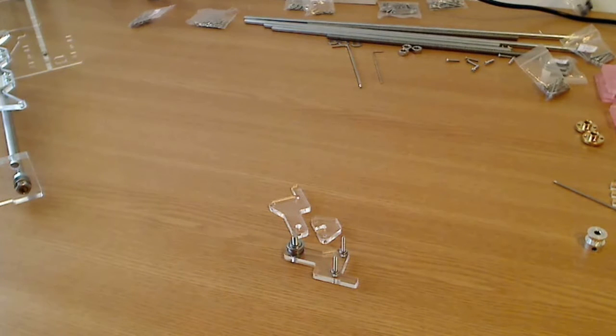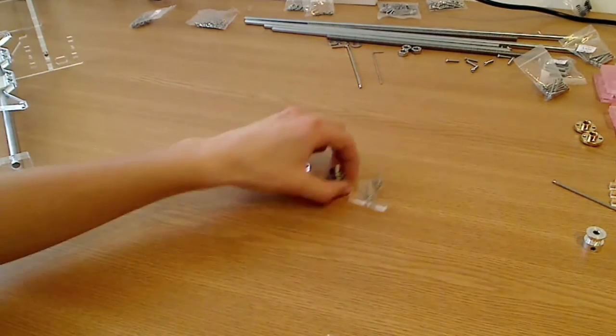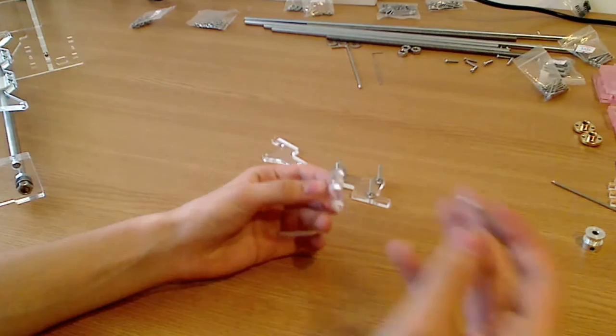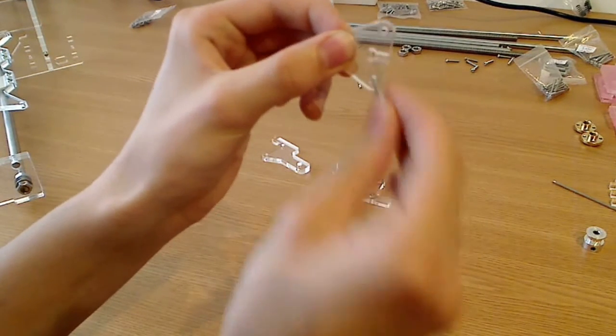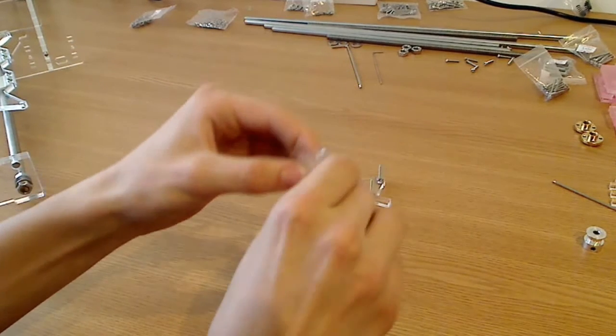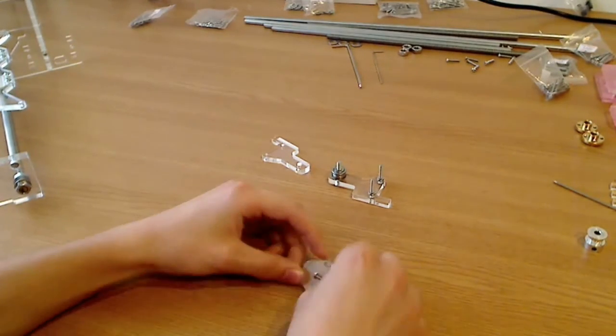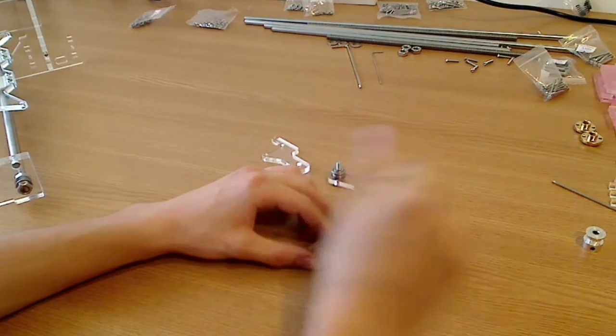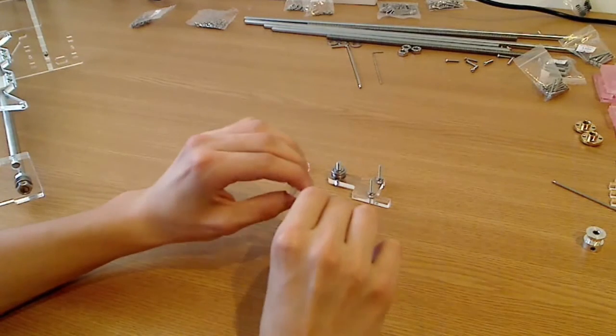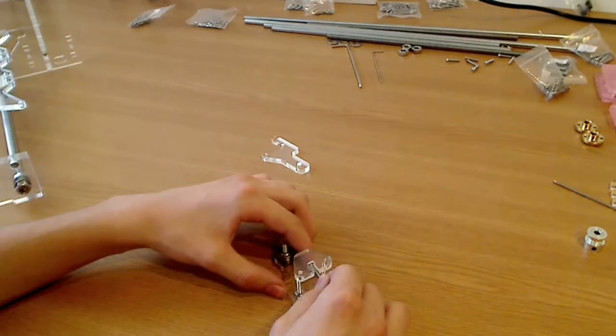Now we need an M3 30mm screw and this part. Now we'll take the screw and put it through this hole right here. Like this. Okay. Now we'll take this part that we just assembled and put it through these screws. And it looks like this.